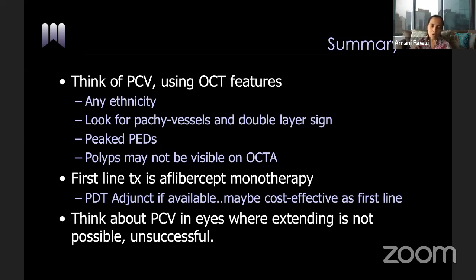Always think about PCV. If someone is extending and doing very well and then suddenly has an explosive subretinal hemorrhage, even eyes that start as regular AMD with regular CNV can convert to polyps. If they convert to polyps, they tend to bleed and you need to keep a closer eye on them. If the course of treatment changes dramatically, think of a new polyp developing in an eye that didn't have it at the beginning.